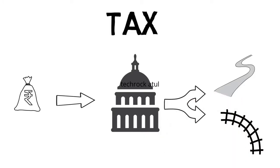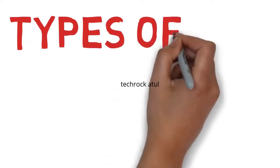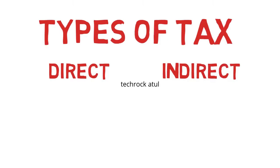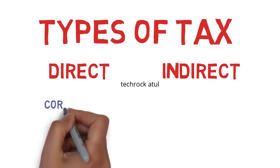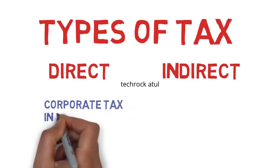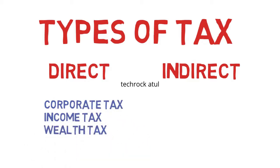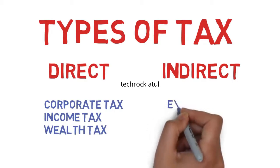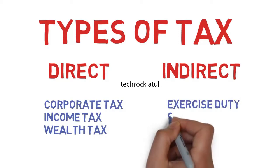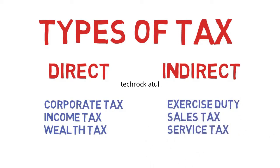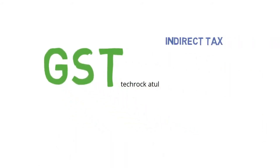And to pay off the national debts. There are actually two types of taxes: one is direct tax and the other is indirect tax. Direct tax is one whose liability cannot be shifted to someone else, like corporate tax, income tax, wealth tax, etc. But indirect tax is the tax whose liability can be shifted to someone else — it includes central excise tax, sales tax, services tax, etc.